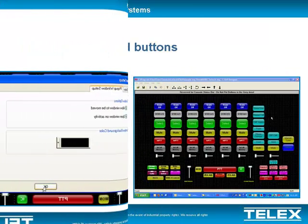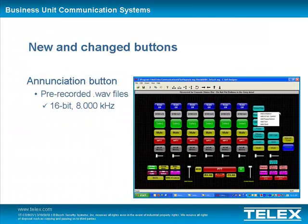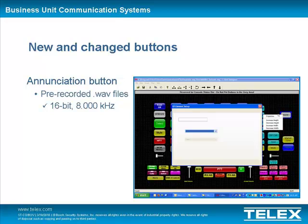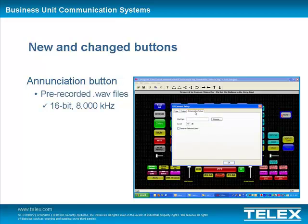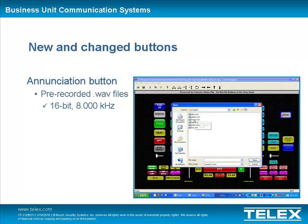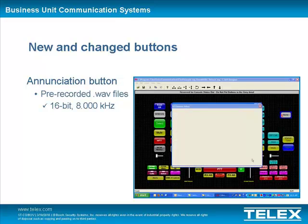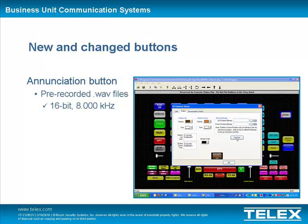Several new buttons have also been added to CSOP version 5. The Annunciation button allows the user to send a pre-recorded WAV file to radio users. The button will wait to send the WAV file until all console TX traffic and any RX traffic on the line ceases, and then it will send the file in the order the Annunciation buttons were pressed. The WAV file must be saved with a 16-bit, 8.000 kHz sample rate.